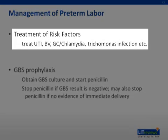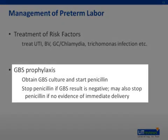Number three is treatment of risk factors for preterm labor. If the patient has a urinary tract infection, bacterial vaginosis, or a sexually transmitted infection such as chlamydia, gonorrhea, or trichomonas, you would treat it. Finally, number four is group B streptococcus prophylaxis. If your patient is in preterm labor and her group B streptococcus status is unknown, you would obtain cultures using a vaginal rectal swab and then start IV penicillin. If the cultures for GBS come back negative or if the patient has recent negative cultures on record, then there is no need for antibiotic prophylaxis and they can be stopped. If contractions abate spontaneously or with tocolytics, or the cervix does not change any further, the patient is no longer in active preterm labor and antibiotics for GBS prophylaxis can be discontinued.